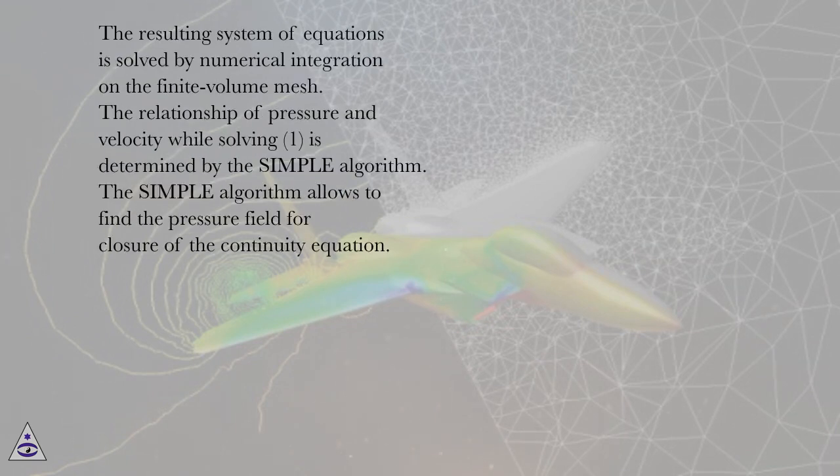The resulting system of equations is solved by numerical integration on the finite volume mesh. The relationship of pressure and velocity while solving equation 1 is determined by the SIMPLE algorithm. The SIMPLE algorithm allows to find the pressure field for closure of the continuity equation.